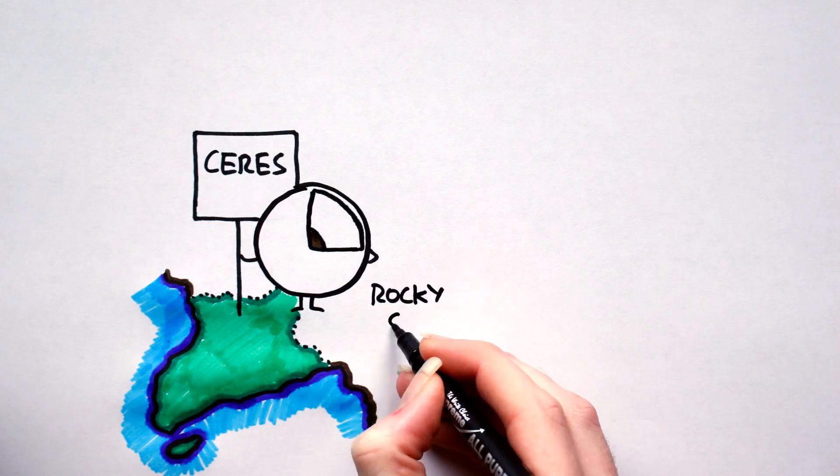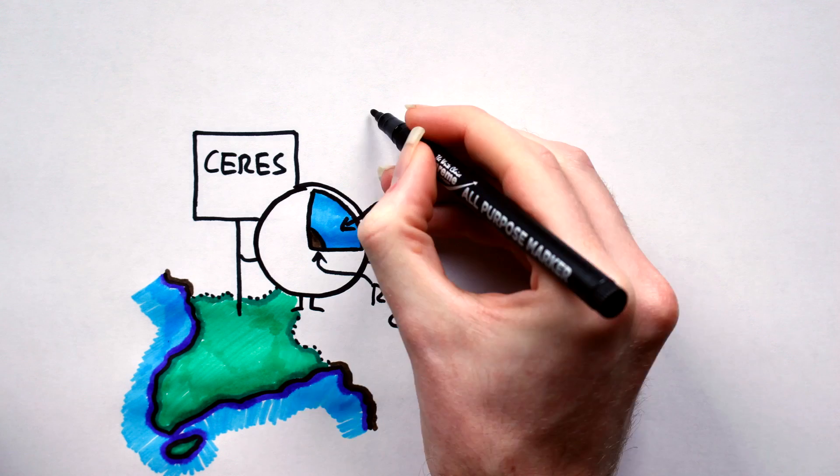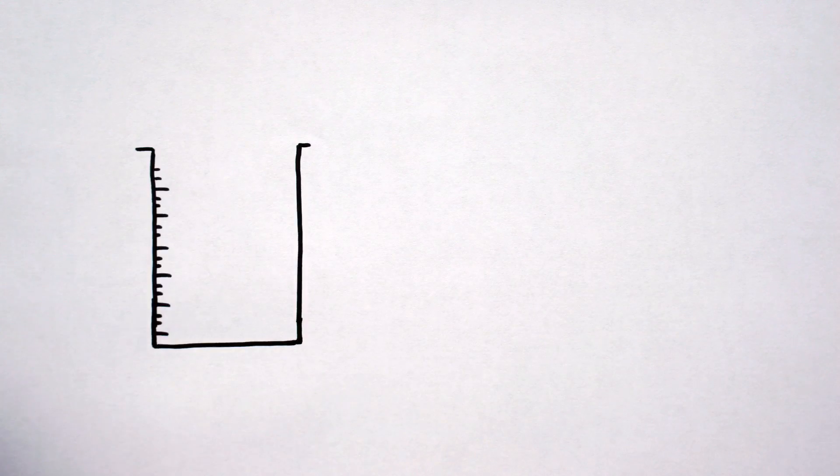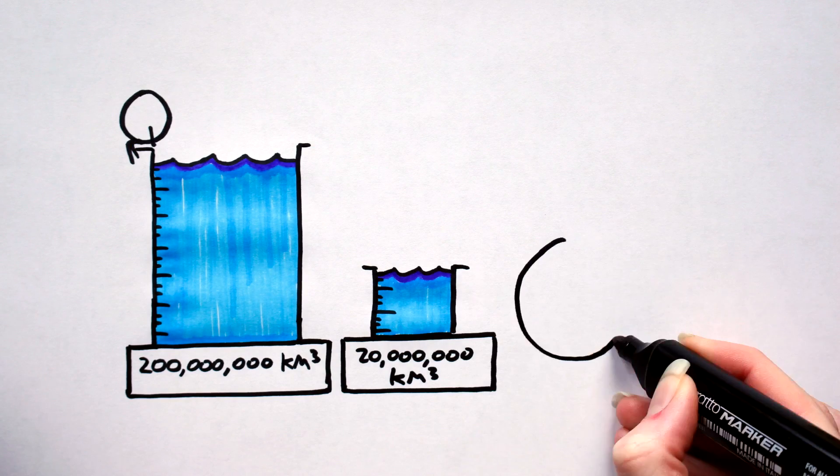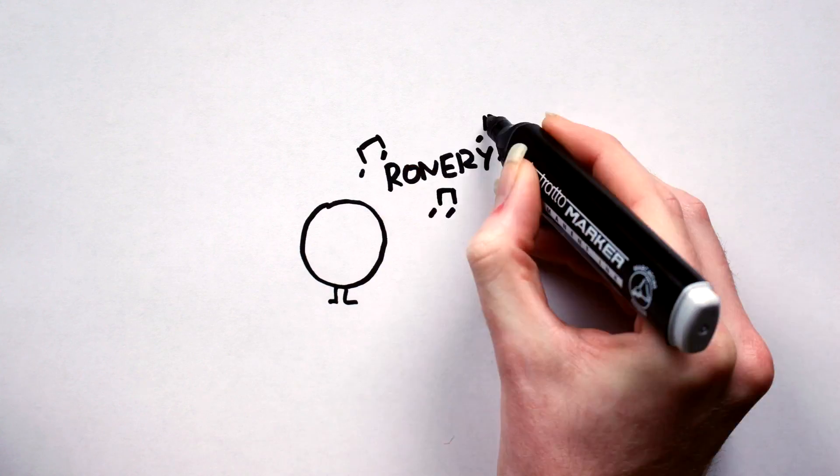Its internal structure is thought to consist of a rocky core, covered with a 100km thick water ice mantle and a thin dusty crust of carbonates and clay. 200 million cubic kilometers of water is trapped within this mantle, which is larger than the Earth's supply of fresh water. And where there's water, there may well be life. Unlike many other dwarf planets, Ceres does not have a moon.